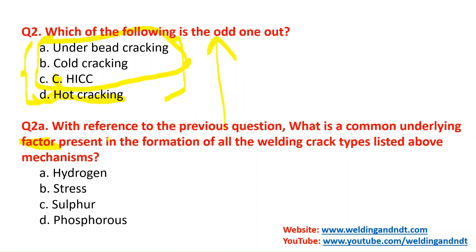The common factor applicable to all four crack mechanisms is stress. Any crack happens when the internal stress of the material increases. If you want to understand the mechanisms of underbead cracking, cold cracking, hydrogen-induced cracking, and hot cracking in depth, you can watch my CSWIP 3.1 video lectures where each mechanism is explained as part of the CSWIP 3.1 syllabus.